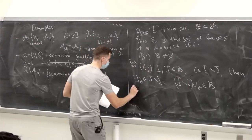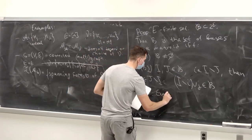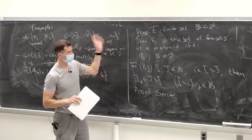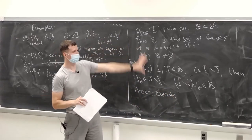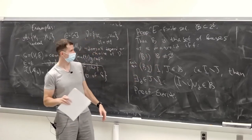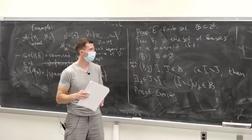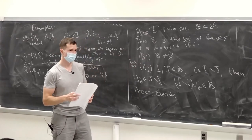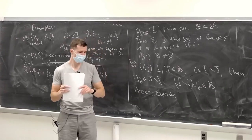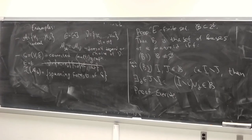There are actually about five different formulations like this for different collections of objects that characterize matroids, and it's quite annoying to prove all the equivalences — but it's a good exercise if you want to practice the axioms. I'm out of time, so I'll see you all on Friday. Thanks a lot for coming to lecture.